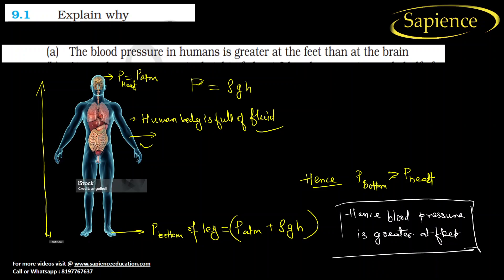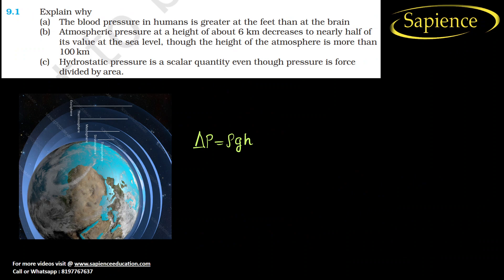Now let us go to question 9.1b: atmospheric pressure at a height of about 6 km decreases to nearly half its value at sea level. The height of the atmosphere is more than 100 km. Using the hydrostatic formula, let us understand why this discrepancy occurs.